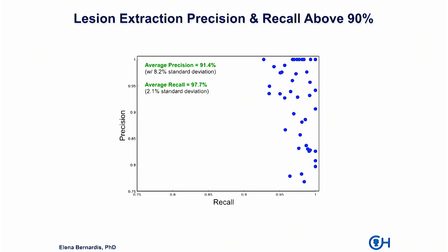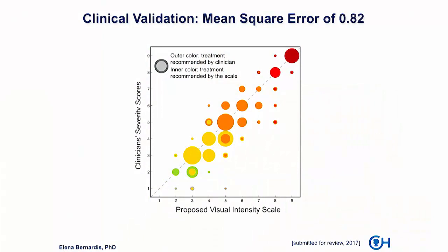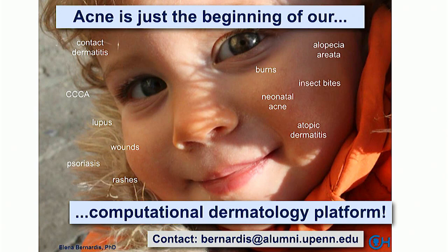The performance of our algorithm for lesion extraction: we obtain precision and recall above 90%. For context, when studies do lesion counting, trained dermatologists and clinicians range between 85–90%, but in general clinicians have a much higher inter-variability rate, so accuracy is more like 75%. We validated the scale with six clinicians, and our error was below one severity level score, while the clinicians' error given the same images in different contexts was actually closer to one.